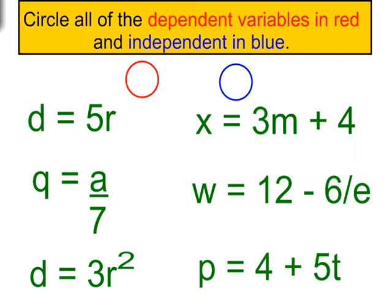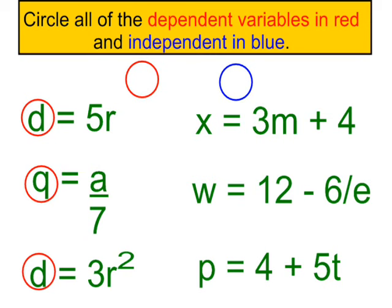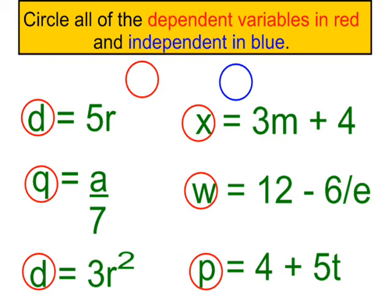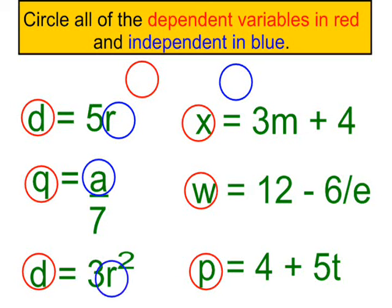Let's look at a couple of real-life examples, but first let's look at a variety of equations. I'm going to circle all the dependent variables in red. In our first example, the value of d depends on the value of r. In the next, q depends on a. Here, d depends on r again. These are all dependent variables because they depend on their independent variables. Now circling the independent variables: r, a, r, m, e, and t.